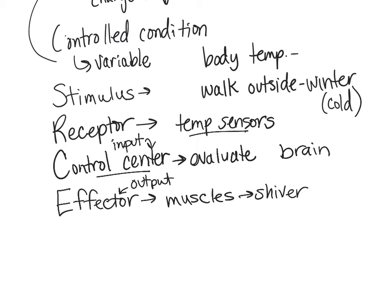To summarize the feedback system: we have our controlled condition — the variable we're monitoring. We have our stimulus — what causes the change or disruption in that variable. Then the receptor picks up on the stimulus, sends input to the control center, which evaluates the information and sends output to the effector, which follows through with whatever change needs to happen.